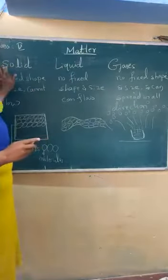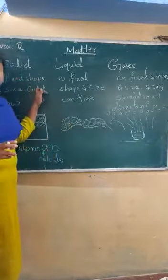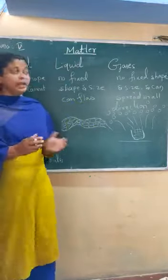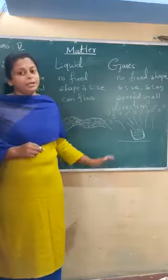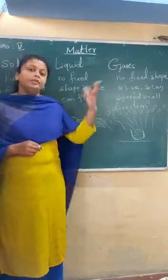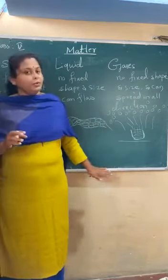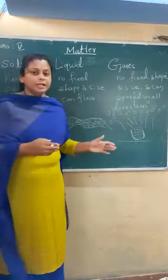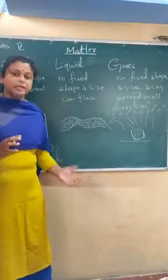Let's discuss solids first. A solid has a definite or fixed shape and size, and it cannot flow. For example, this board — this board has a definite shape. Today, now, in the evening, tomorrow, after one week, one month, one year — if you see this board, the shape, size and color are going to remain the same. It is not going to flow because it has a definite shape. A substance like this we call a solid.